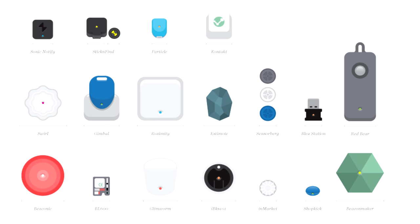There are many different types of beacons and different brands — there are AltBeacons, iBeacons, Gimbals, and many others. They all differ in little ways, but what they all have in common is that they have a UUID, which is an identifier to know which beacon is which.